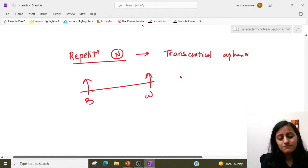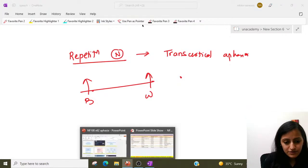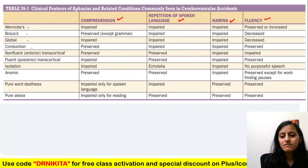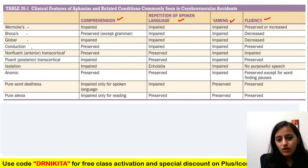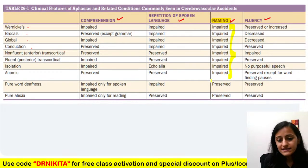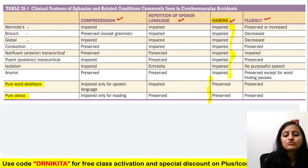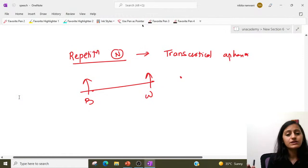Naming is affected in all aphasias shown in the table. Where is naming preserved? Only in pure word deafness and pure alexia. We will come to that later. Now let's look at fluency, repetition, and comprehension.